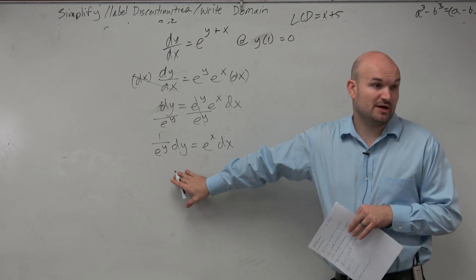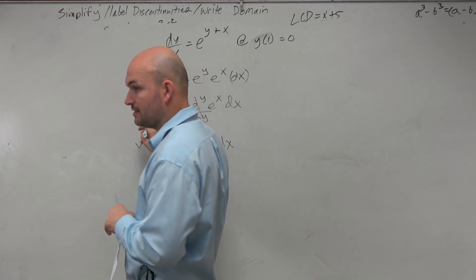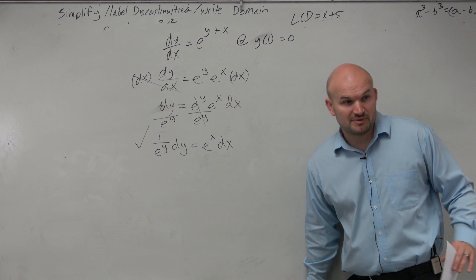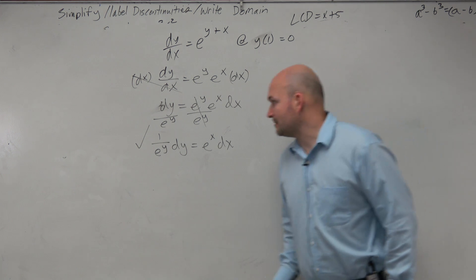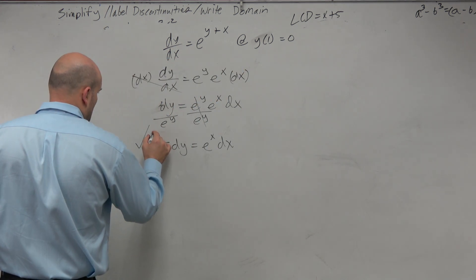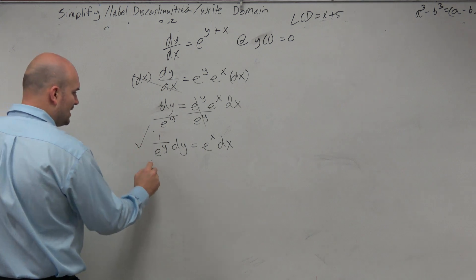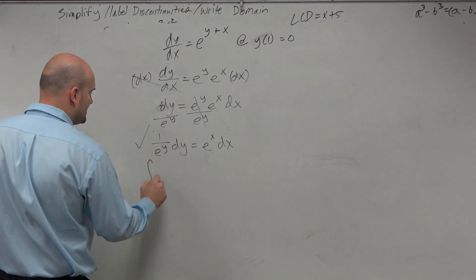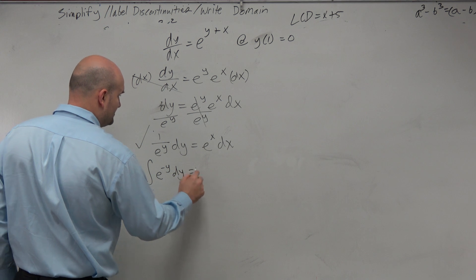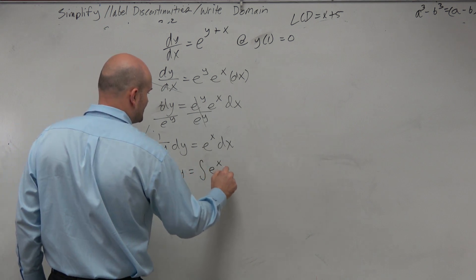So now we've separated our variables, and usually that's worth a good check. Now the next thing we need to do is integrate. So if I'm going to integrate here — typically, if I was going to integrate 1 over e to the y, I would rewrite this as e to the negative y dy, equal to the integral of e to the x dx.